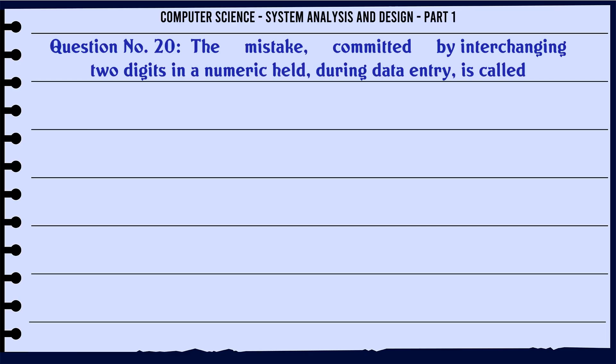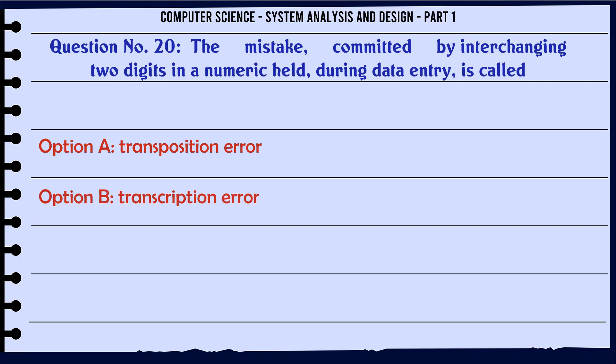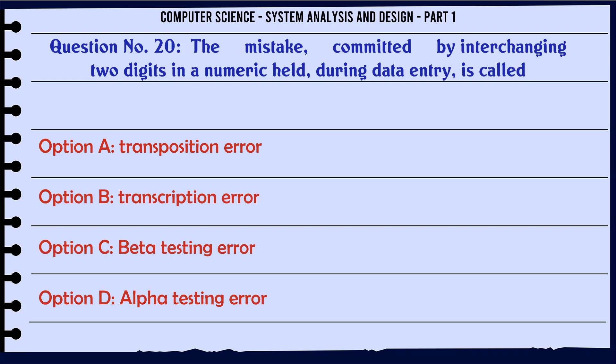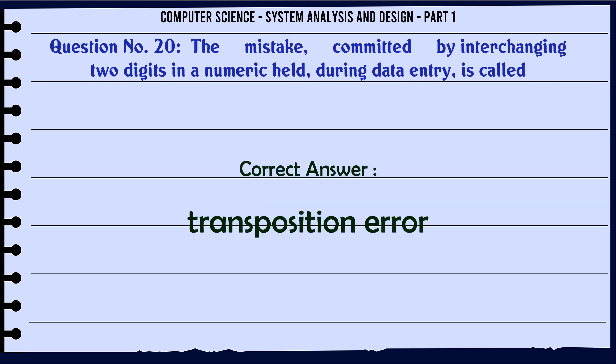The mistake committed by interchanging two digits in a numeric field during data entry is called: A. Transposition error. B. Transcription error. C. Beta testing error. D. Alpha testing error. The correct answer is: Transposition error.